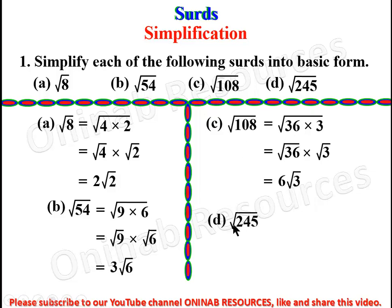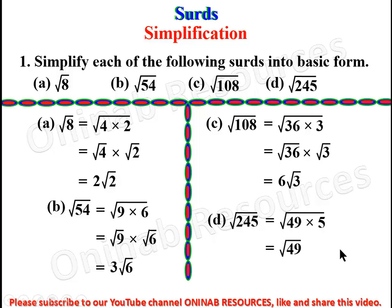Then the D part: square root of 245. We check if dividing by 5 gives a perfect square — 245 divided by 5 is 49, which is indeed a perfect square. So 245 is 49 times 5. We have it as square root of 49 times square root of 5. Square root of 49 is 7, so the final result is 7 root 5.